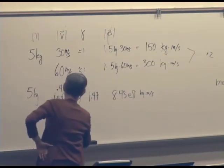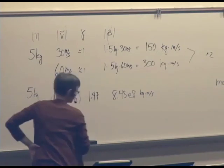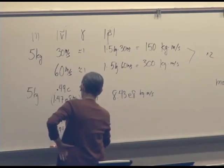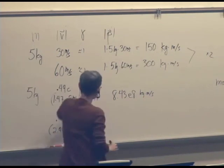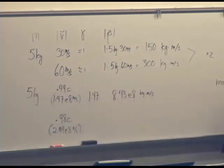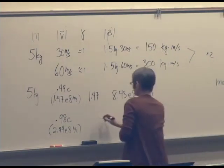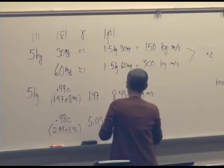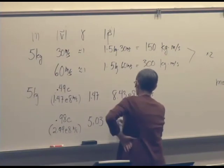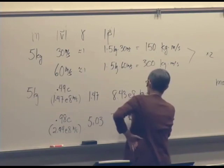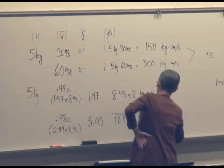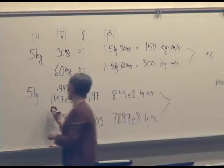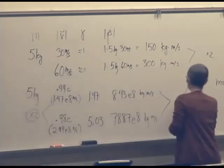Now suppose we double it. So it's going 0.98 times the speed of light, which doubles the speed. So the speed is now 2.94 times 10 to the eighth meters per second. Because this is squared in here, the value of gamma actually comes out to be 5.03 approximately. And so the actual momentum is 78.87 times 10 to the eighth kilogram meters per second. This is not a factor of 2. This is a factor of 2. But this is a factor of more than 9.